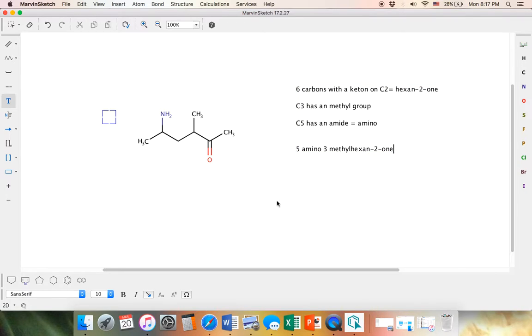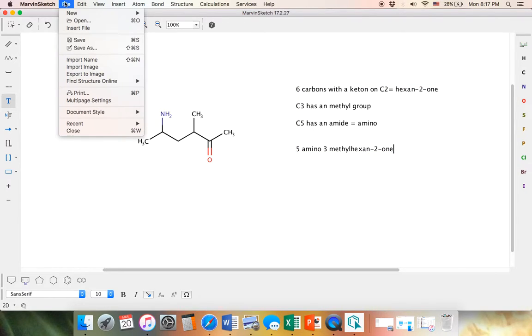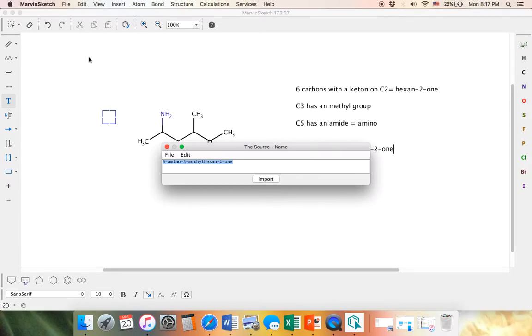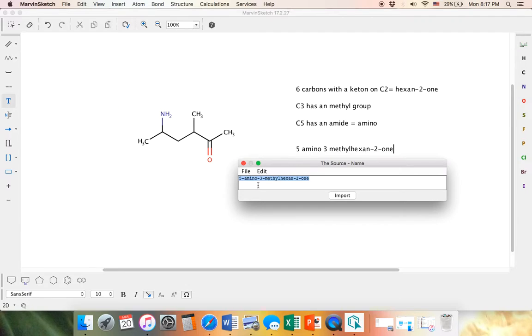And so now we're going to check it. So let's go to file, import name. And I didn't put in all the dashes. Depending on how picky your instructor is, you may or may not want to make sure you do that. So let's compare. 5-amino, 3-methylhexan-2, one.